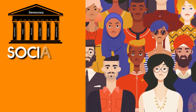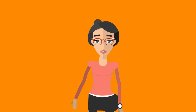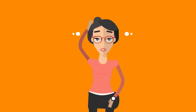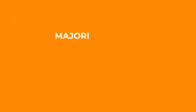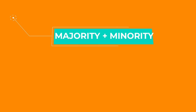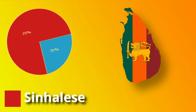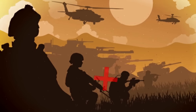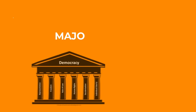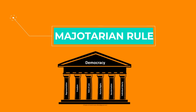Democracy can accommodate social diversity when there are two conditions. Number one: the majority and minority have to work together. If Sinhalese and Tamils had worked together, there would have been no war.